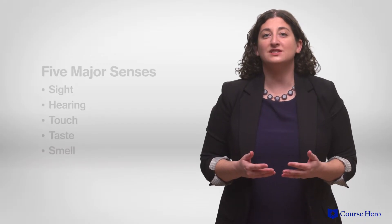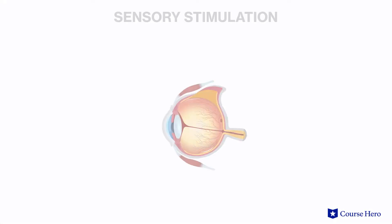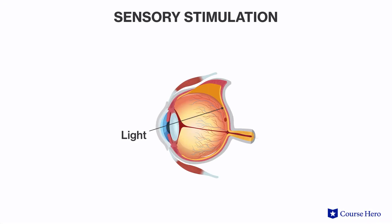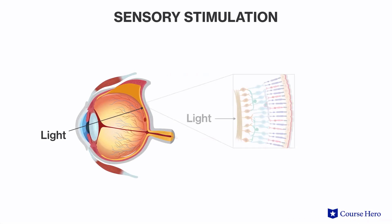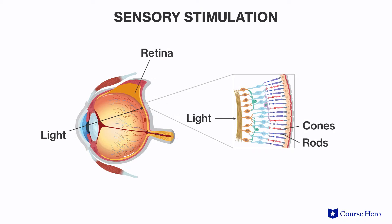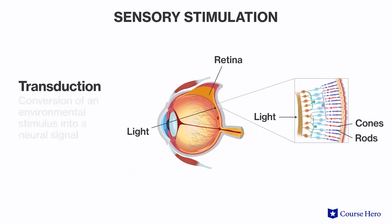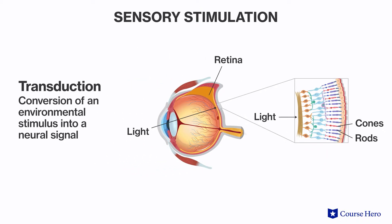First, sense organs receive a specific type of sensory stimulation — for example, light entering the eye. Then specialized sensory receptor cells, in this case rods and cones in the retina, convert that environmental stimulus into a neural signal, a process called transduction.